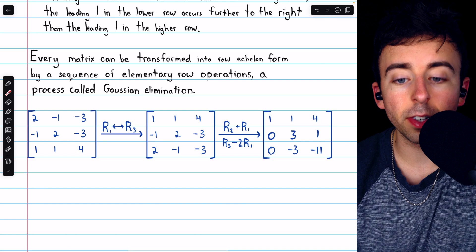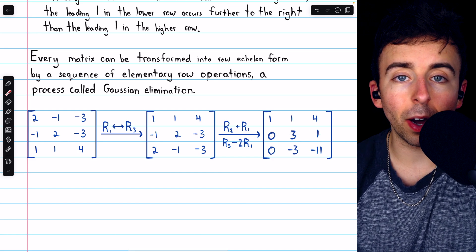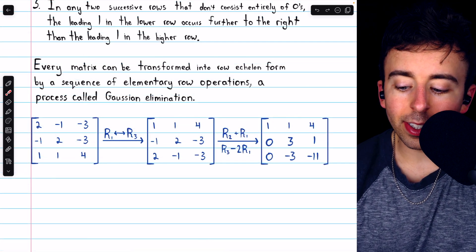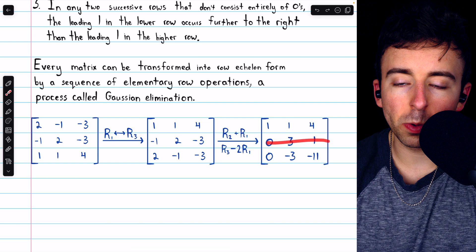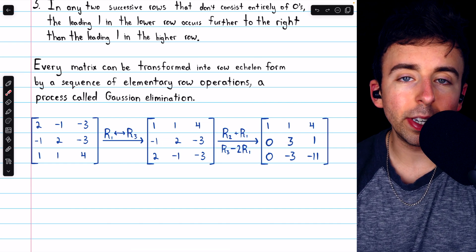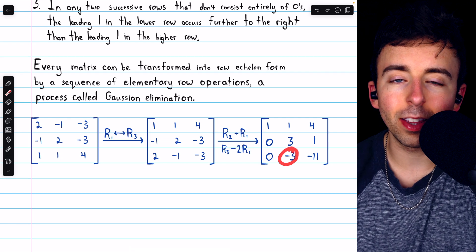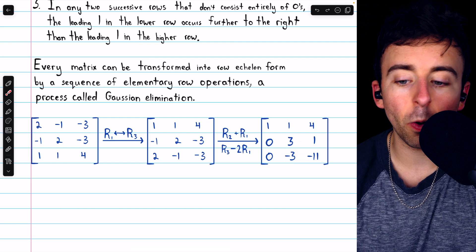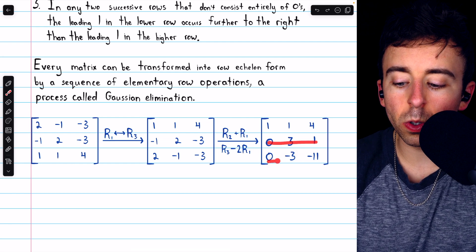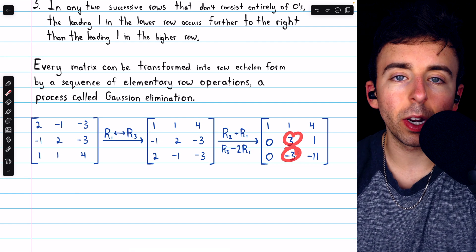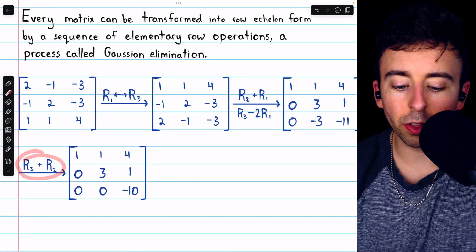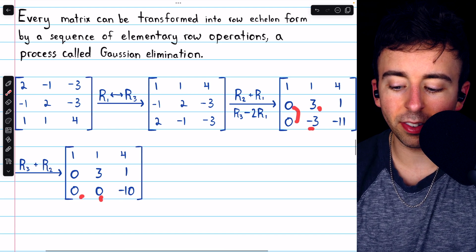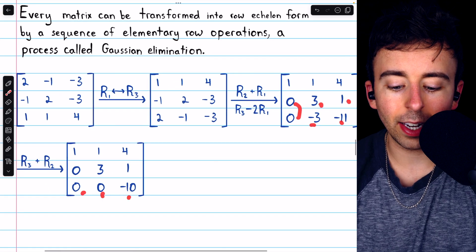Now we want the first non-zero entry in row two to be positive one, so we'll multiply row two by one-third. But before we do that, we'll also want the entry below the leading one to be zero. So let's make that entry zero now by adding row two to row three — the three and negative three will cancel out. Adding row two to row three gives us zero plus zero is zero, negative three plus three is zero, and negative eleven plus one is negative ten.